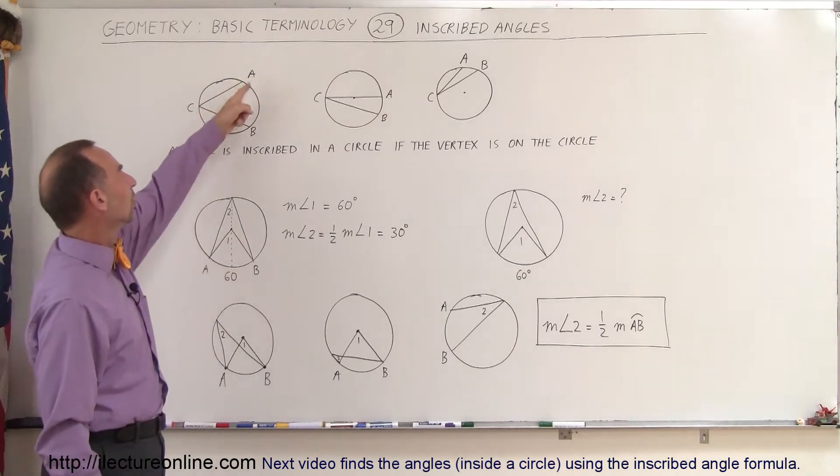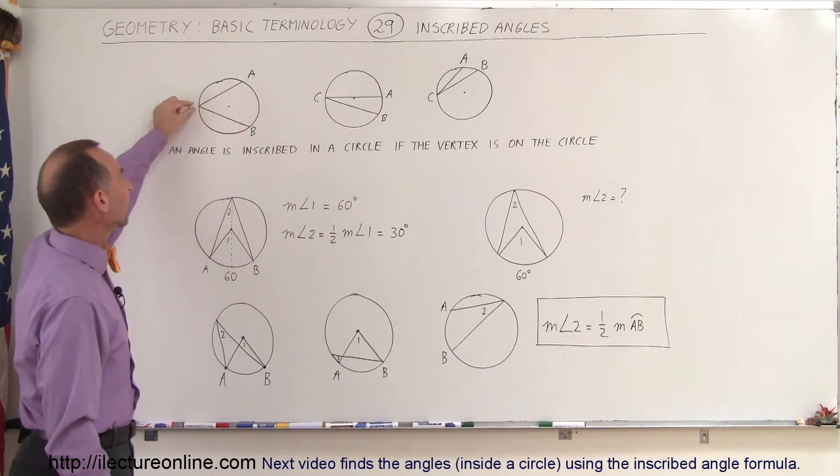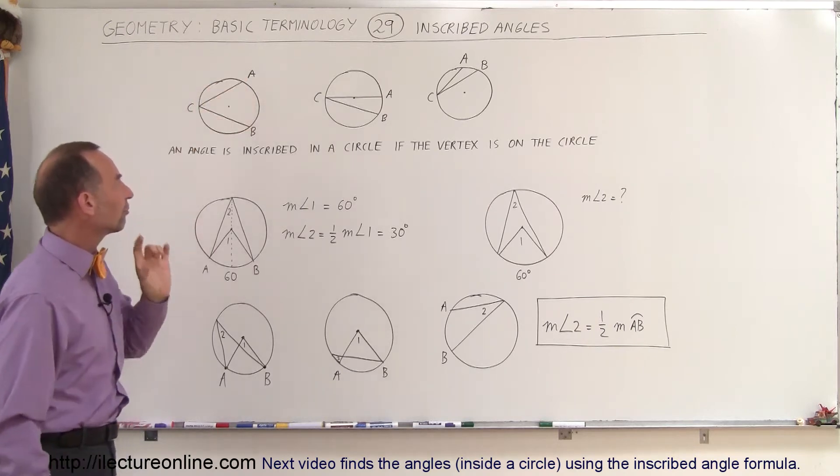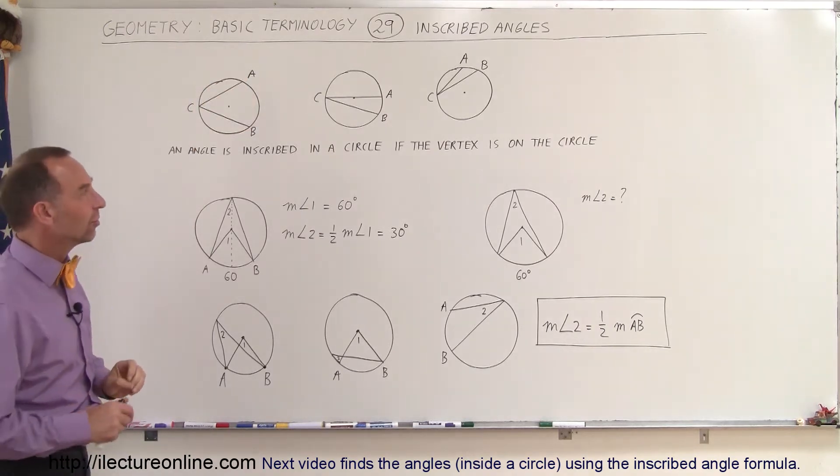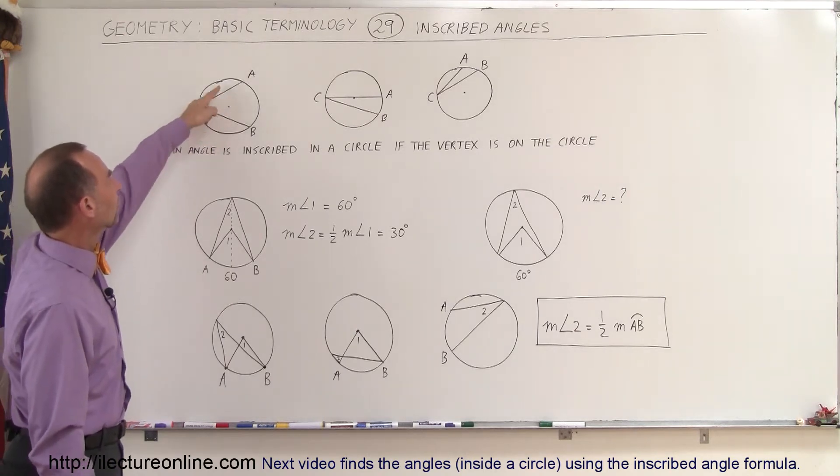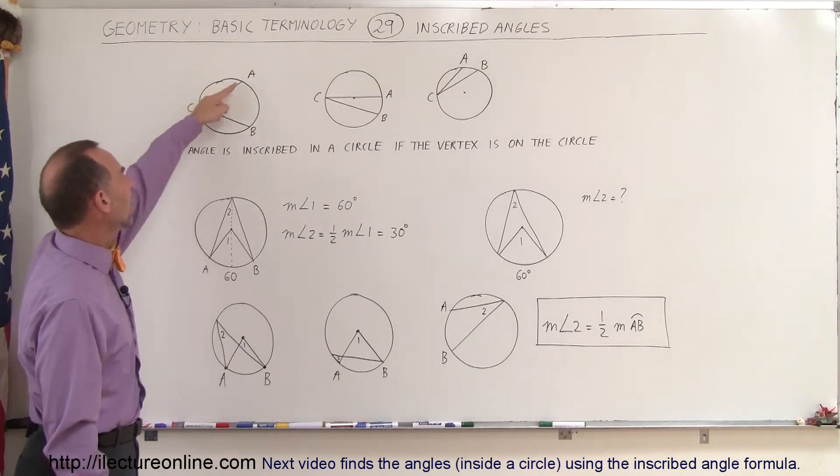Again, we have two points on the circle, A and B. You can see that the angle here is associated with the arc from A to B in all three cases. Notice in this case that the center point of the circle is between the two lines connecting C to A and C to B.